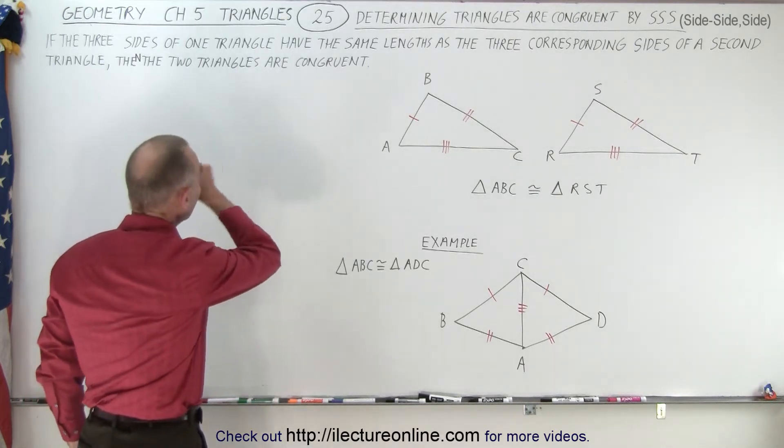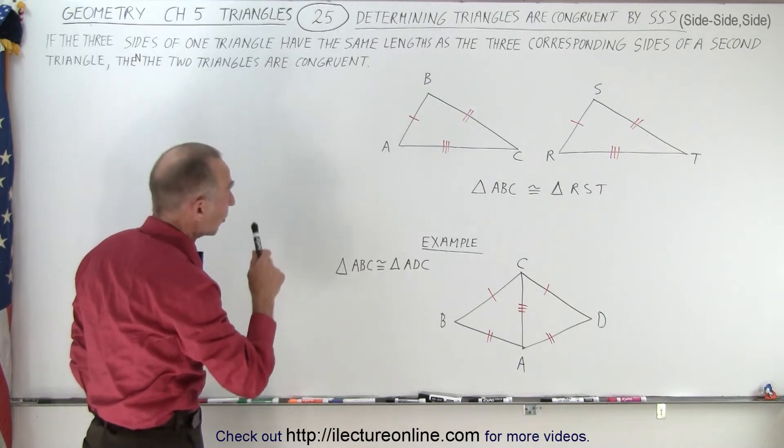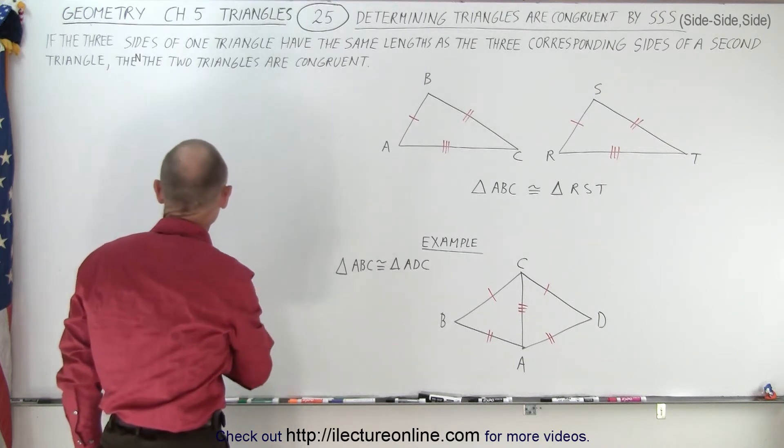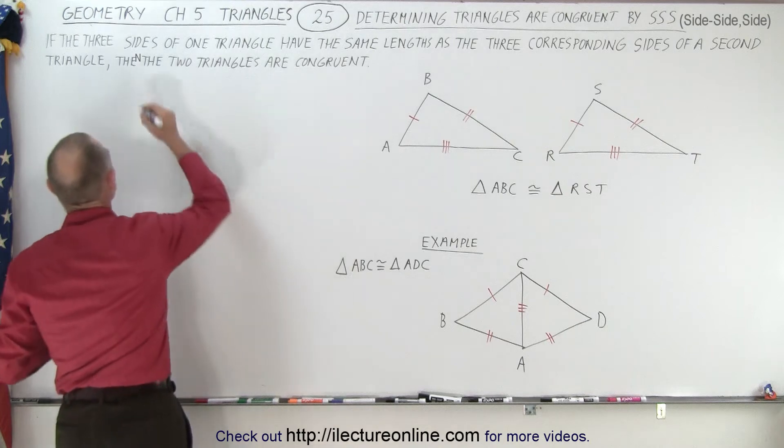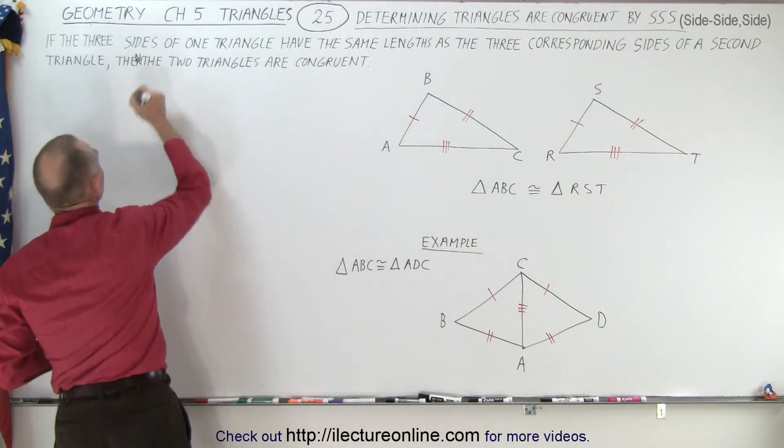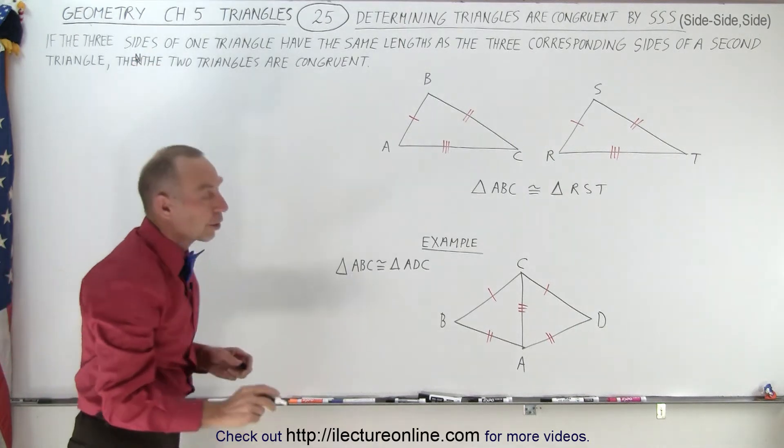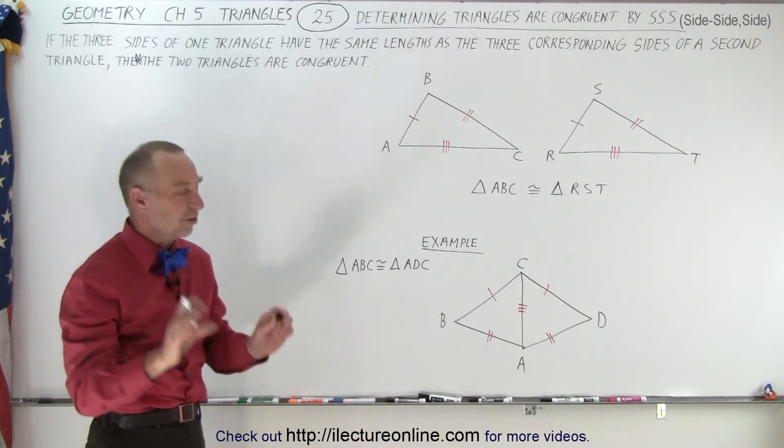If the three sides of one triangle have the same lengths as the three corresponding sides of a second triangle, then the two triangles are congruent, and it's the only necessary condition.